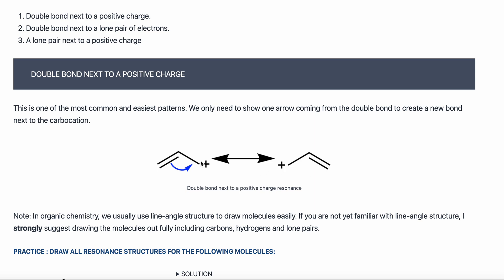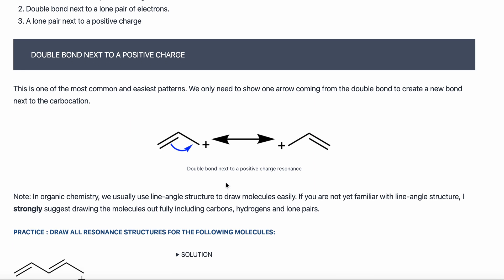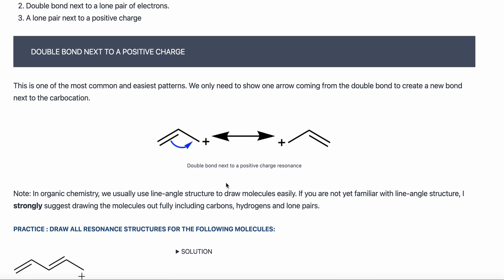This bond is moving over — now it is on the right. This carbon that had a positive charge was missing electrons, but now I'm giving it electrons, so it becomes neutral. The carbon on the left lost one of its bonds, which means it lost electrons and will therefore have a positive charge. You can look at the formal charges video to calculate and verify this.